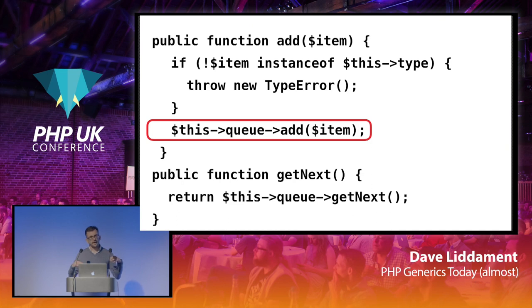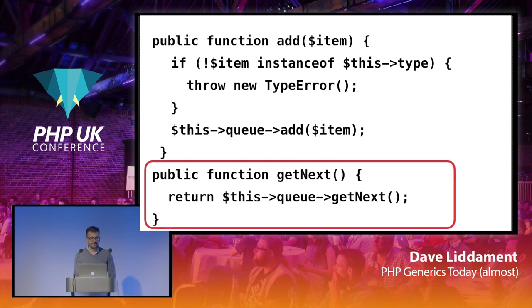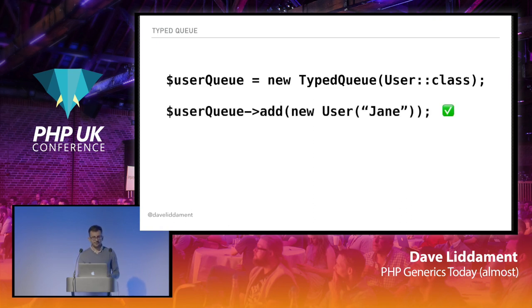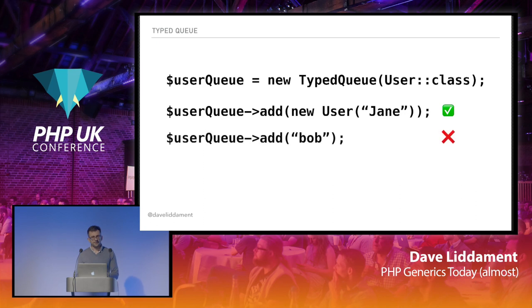This typed queue means there's no way to get something in that is not of the right type, and our get-next method is just a wrapper. We would instantiate this queue saying we're making a typed queue and in this case we want it to contain objects of type User. So if we tried to add a User to the user queue, it would be fine — but if we tried to add a string, it would fail.